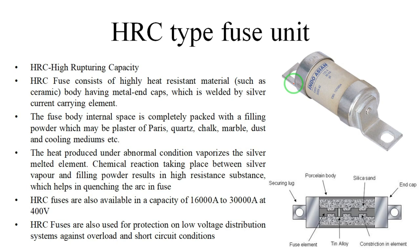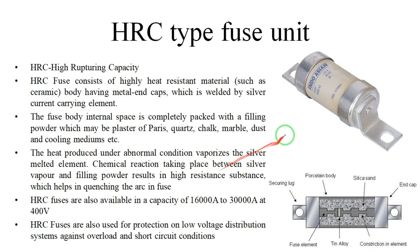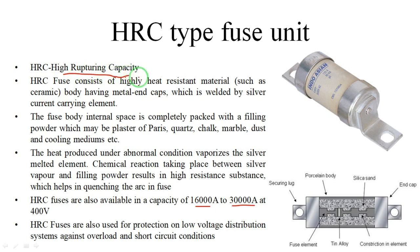The third type is the HRC type fuse. HRC means High Rupturing Capacity. This fuse also looks like a cartridge type fuse, but the difference is the current rating — the cartridge fuse is rated at 600 amperes, while the HRC fuse has a large current capacity of 16,000 to 30,000 amperes at 400 volts. The fuse consists of a highly heat-resistant body with metal end caps and two silver connectors. The internal space of the fuse body is completely packed with a filling powder.